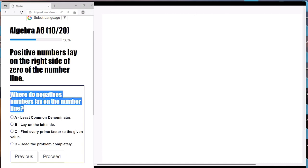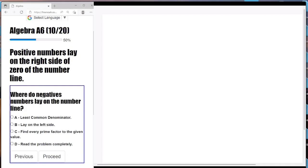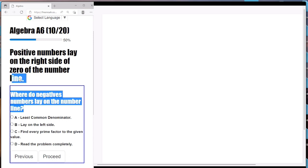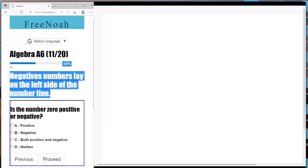Moving on to question 10. Question 10 is asking, where do negative numbers lie on the number line? Well, they're going to lie on the left side, right? Left side of zero, to be specific.